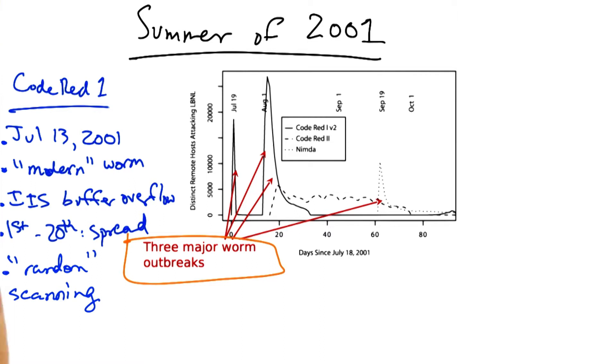It would spawn 99 new threads which generated IP addresses at random and then looked for vulnerable instances of IIS. Now version 2 of Code Red 1 was actually released six days later and fixed the random scanning bug, so that each instance of the worm scanned a different part of IP address space. After the scanning bug was fixed, the worm was able to compromise 350,000 vulnerable hosts in a matter of only 14 hours.